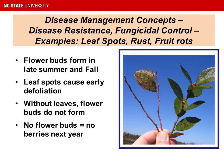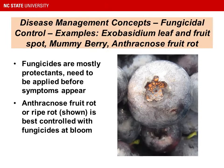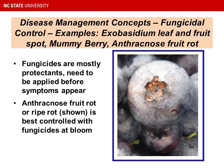In the next few slides, we'll talk about diseases that require fungicidal control. The examples will be Exobasidium leaf and fruit spot, mummyberry disease, and anthracnose fruit rot. Fungicides are mostly protectants, so you need to be applying them before the symptoms appear. Once disease is evident, it's too late to control diseases with fungicides. For instance, anthracnose fruit rot, or ripe rot, is best controlled with fungicides applied at bloom, and yet the disease manifests itself as a fruit rot at harvest. There is also some good resistance to anthracnose fruit rot in many cultivars; in North Carolina, we will drop a cultivar from our recommended list if we find it's too susceptible to anthracnose fruit rot.